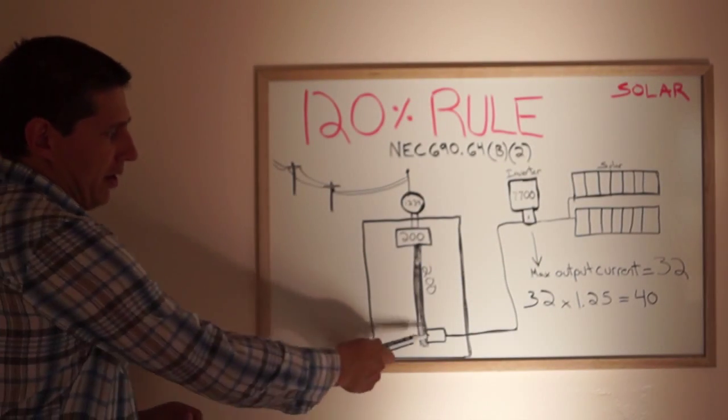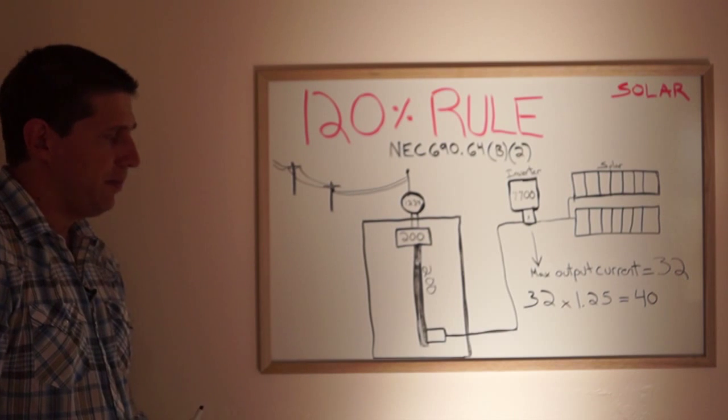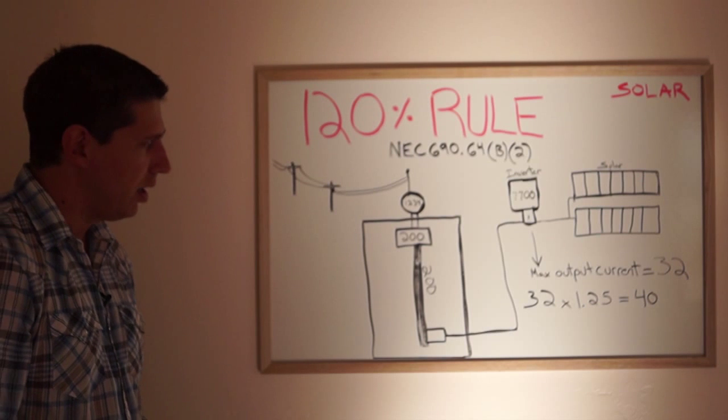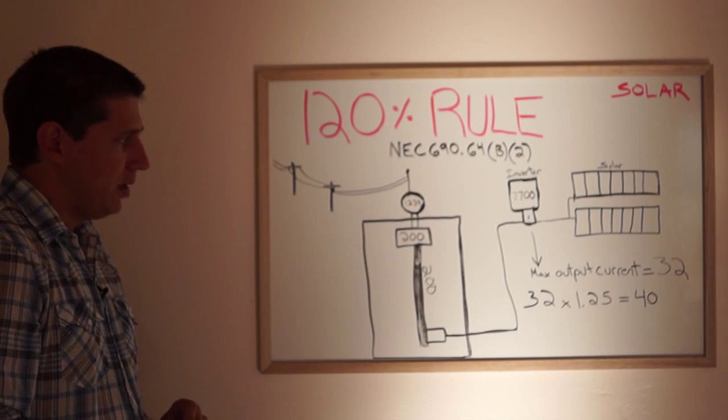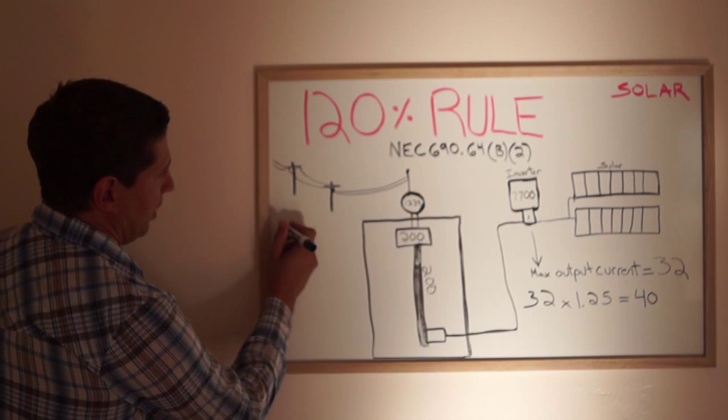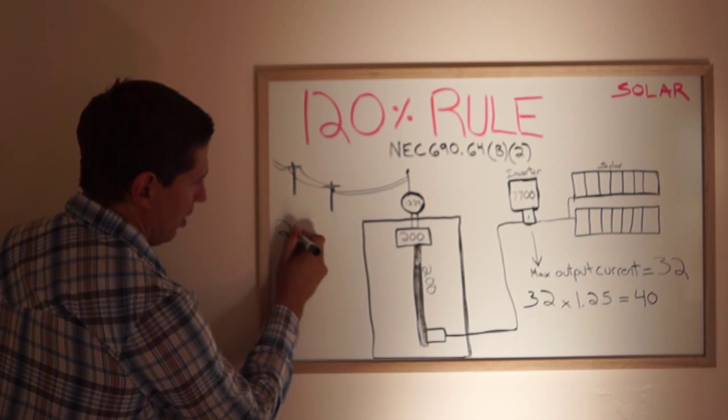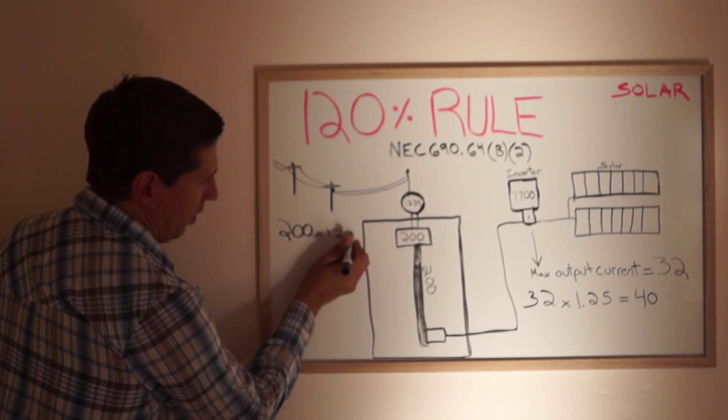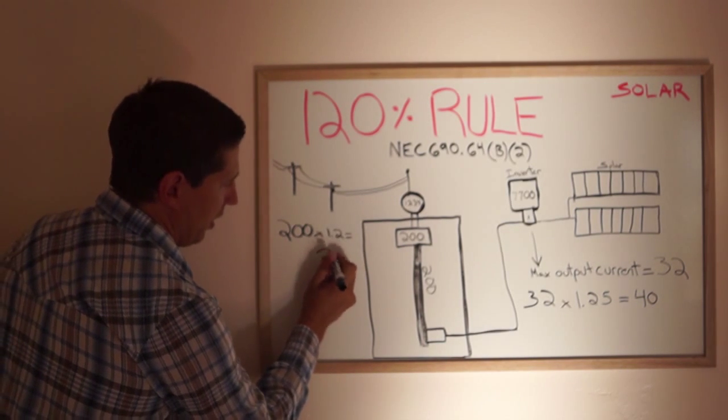So we have a breaker. And the 120% rule essentially limits how big of a solar system we can install. So what it is very simply is 200 times 1.2 equals 240.